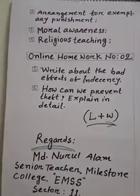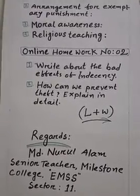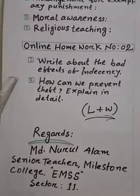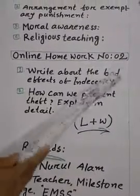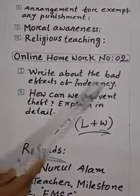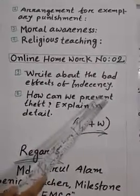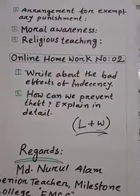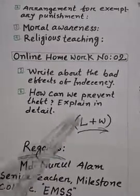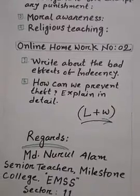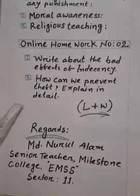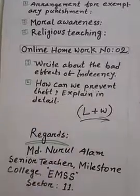Today from our online class, we will get homework number two - to learn and write. I have made two questions. These two questions you will write in your homework copy mentioning online homework number two. First: write about the bad effects of indecency - I have already mentioned seven points, explain according to those points. Second: how can we prevent theft? Explain in detail. Write these two questions in your homework copy, mentioning homework number two.